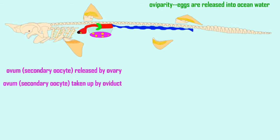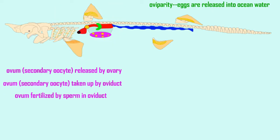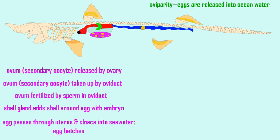There is a shell gland which can add a layer of albumin and mucus around the developing embryo, forming the egg. The egg then passes through the distal end of the oviduct known as the uterus, fuses with the cloaca, and passes out into the seawater where the egg hatches.